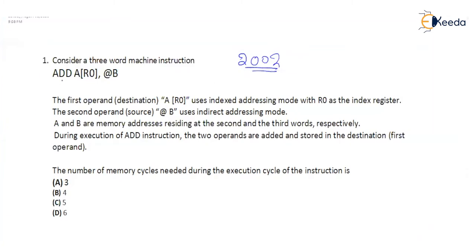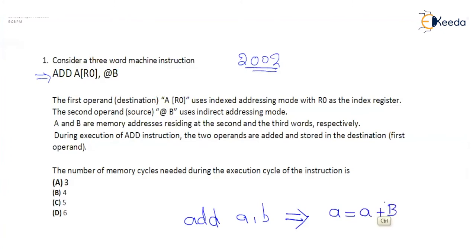Consider a three-word machine instruction: ADD A(R0), @B. This instruction is in the format ADD A, B, in which A = A + B. The first operand is the source as well as the destination; the second operand is just the source operand. So there are two operands in the instruction. After fetching the effective addresses and operands, both will get added and stored in the location of the first operand.